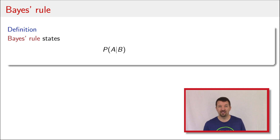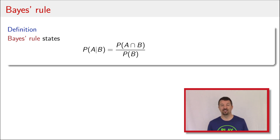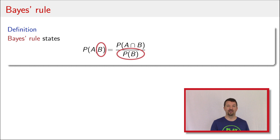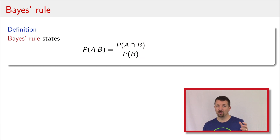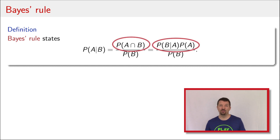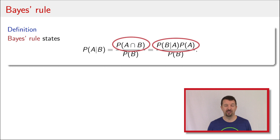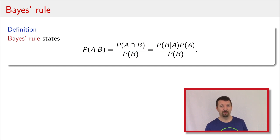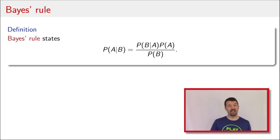So here we're trying to figure out what the probability of A given B is. If you remember our definition for conditional probability, we can write that as the joint probability of A and B divided by the probability of B. We always want to write in the denominator the probability of what's given to the right of the conditioning bar. Now all we're going to do is use our definition for conditional probability again. We've changed the numerator and plugged in our definition for the conditional probability of B given A, rearranged the terms so that we have solved for the joint probability of A and B, which equals the probability of B given A times the probability of A.